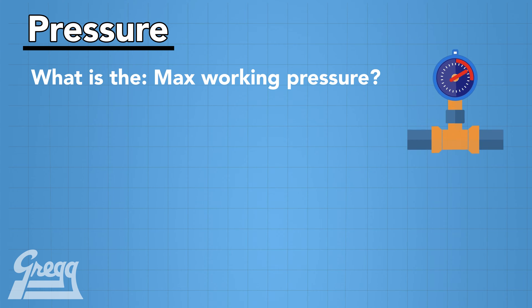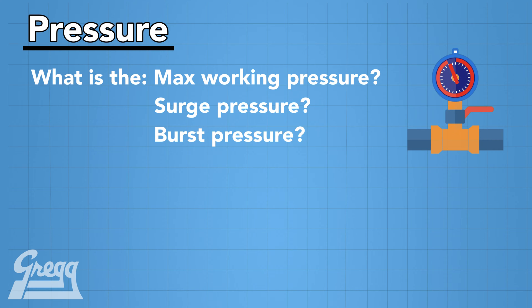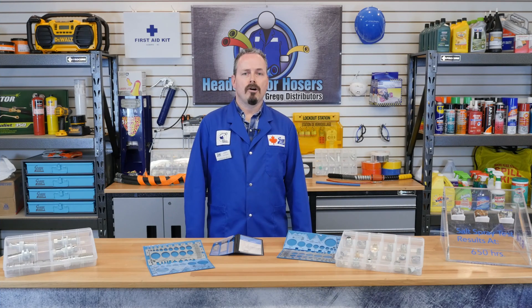P stands for pressure. We need to know the maximum working pressure of that hose. We also need to consider surge pressure — will the hose go from 500 psi to 5,000 psi under working conditions? Next is burst pressure, and that's important because we need to know if the hose is going to be at that maximum working pressure all the time, so burst pressure needs to be taken into consideration.